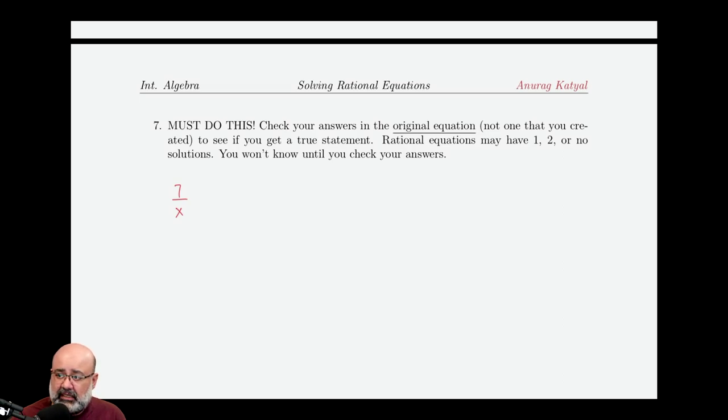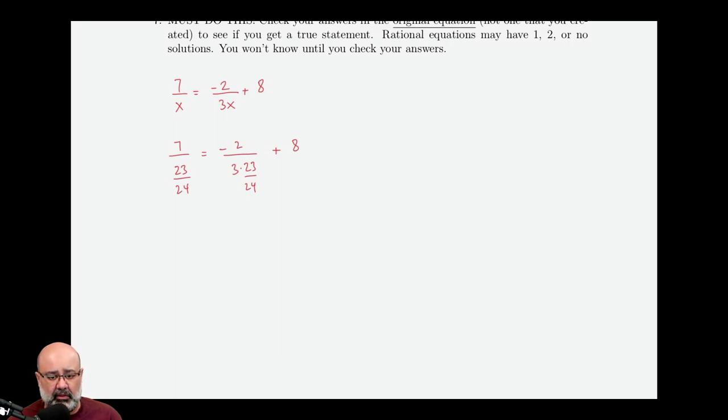So the original equation was 7 over x equals negative 2 over 3x plus 8. So you have 7 over 23 over 24 equals negative 2 over 3 times 23 over 24 plus 8. Now, some of this you can actually hand off to your calculator. You don't have to do all this computation by hand. Let me show you what I mean by that. So on the left-hand side, we can keep change flip. So we keep the 7 as it is. We change the division to multiplication and we flip the denominator. So we get 24 over 23. Let's leave this as it is. Equals negative 2 over... Now, let's simplify this fraction first. So 3 times 23 would be 69 over 24 plus 8.